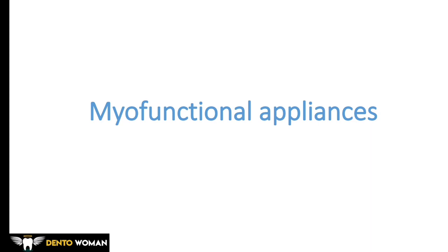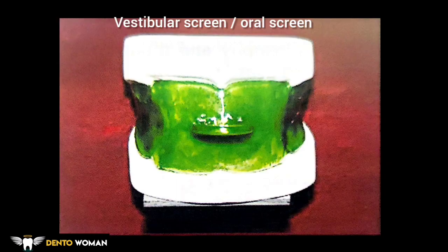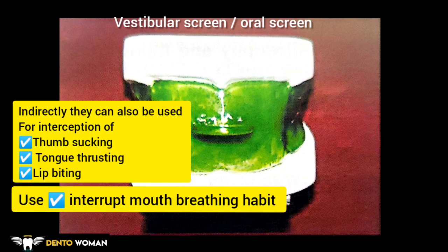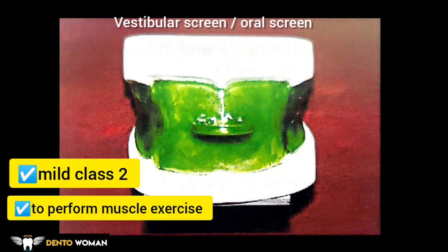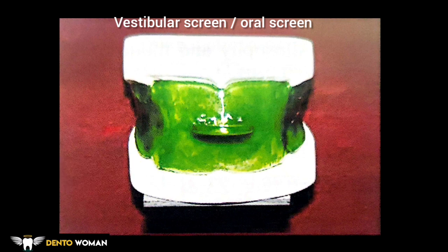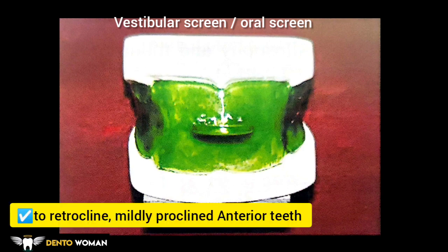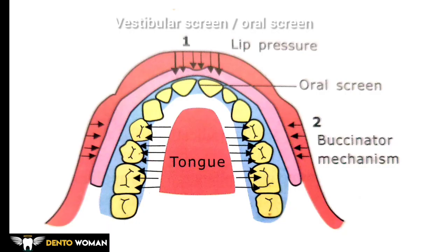This is an image of vestibular screen or oral screen. It is used for habit correction. These appliances are basically meant to interrupt mouth breathing habit. Indirectly they can also be used for interception of thumb sucking, tongue thrusting, and lip biting. They can be used to perform muscle exercises. Mild class 2 malocclusions can be corrected, and the vestibular screen can be used to retrocline mildly proclaimed anterior teeth.